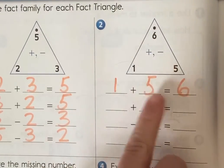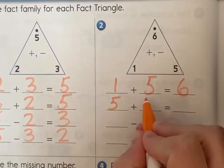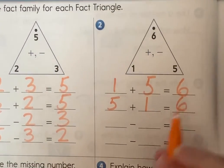Now I'm going to start with the other one and do the turnaround facts. I'm going to turn around these two numbers or switch them. Five plus one also equals six.